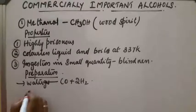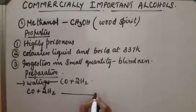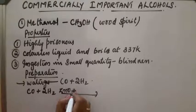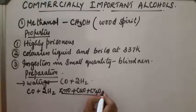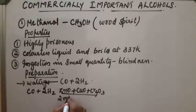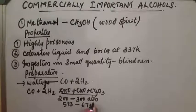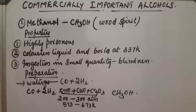Carbon monoxide and hydrogen, with the catalyst being zinc oxide, copper oxide, and chromium oxide, at a pressure of 200 to 300 atmospheric pressure and temperature of 573 to 673 Kelvin. When the reaction takes place, it gets converted into CH3OH — that is, methanol is produced.